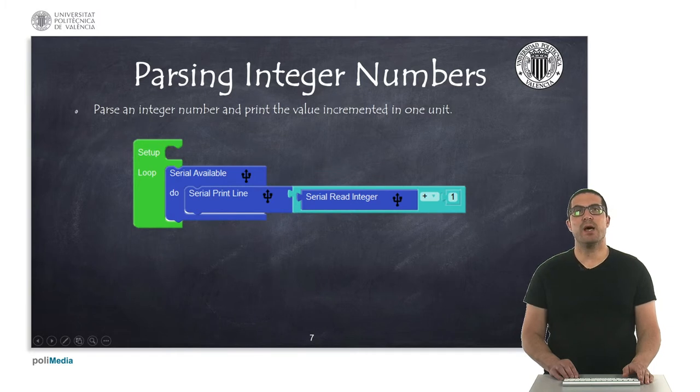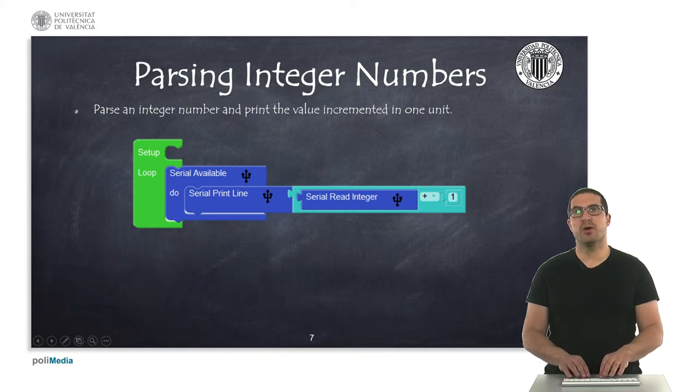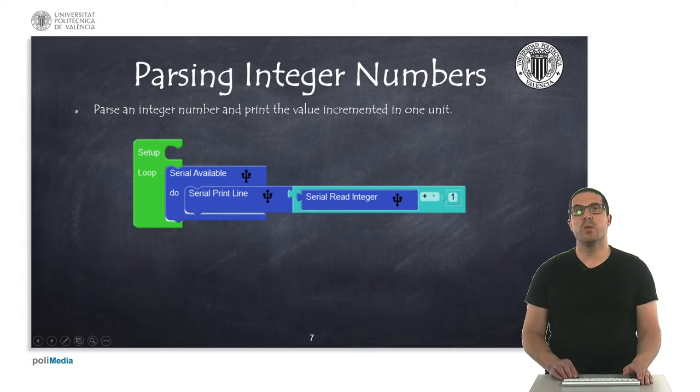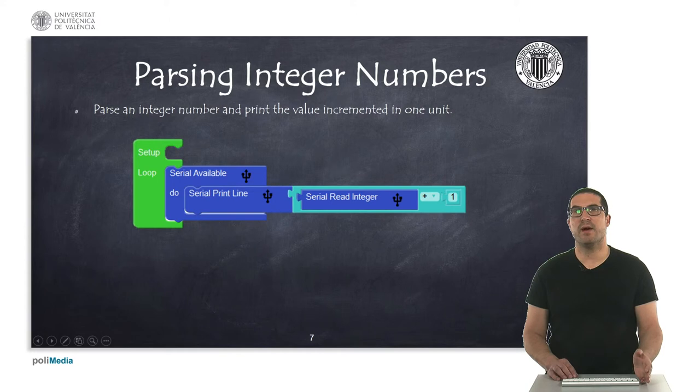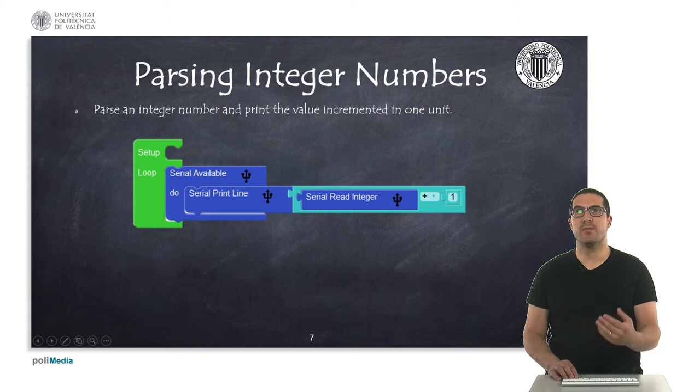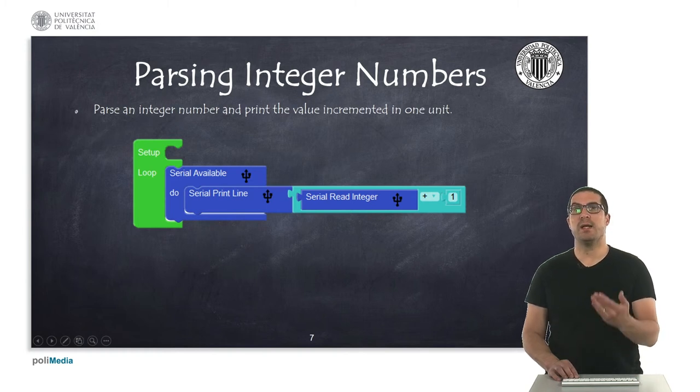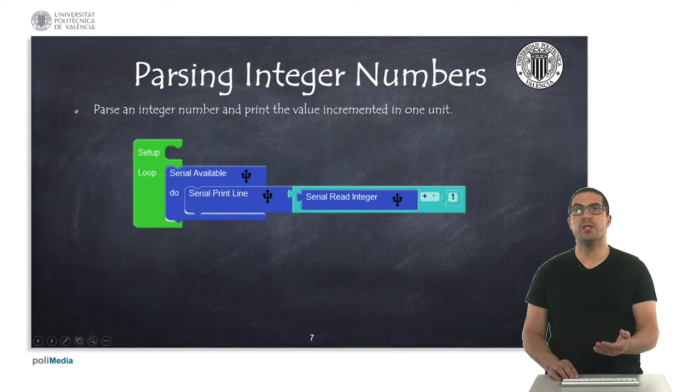Here we have an example of how to parse a number. Whenever we type on the console a text, this is a bunch of numbers that has to be interpreted or parsed. If we type numbers, let's say 45, then this number could be interpreted as text or as a number itself. If it's interpreted as a number, then we can do numeric operations or math operations on it. For instance, in this example, whenever we type a number, we can add up one unit and then print it back on the console.